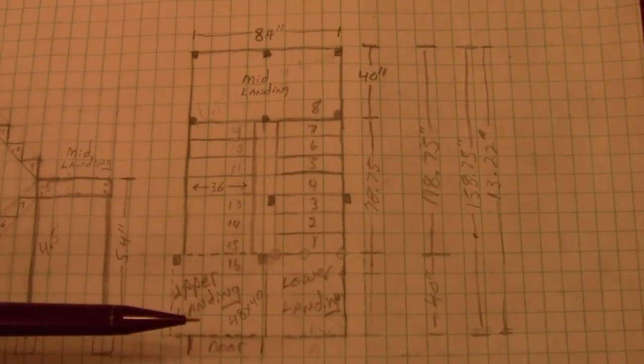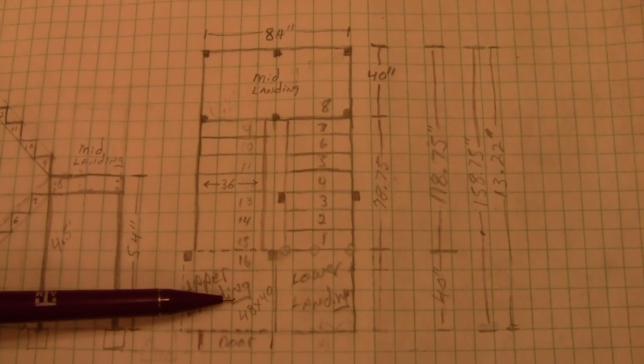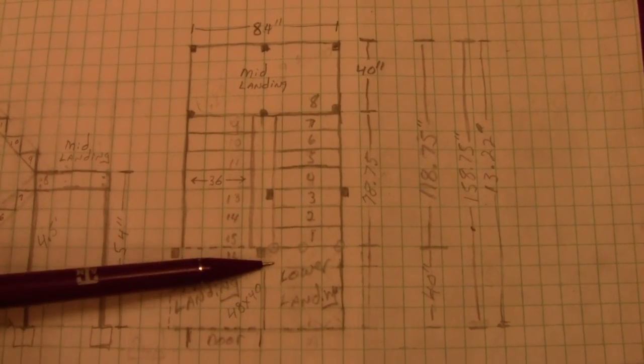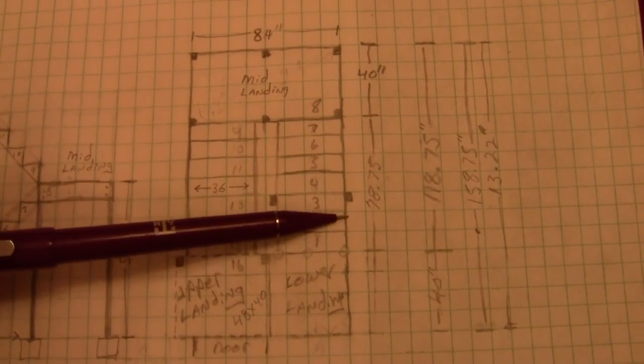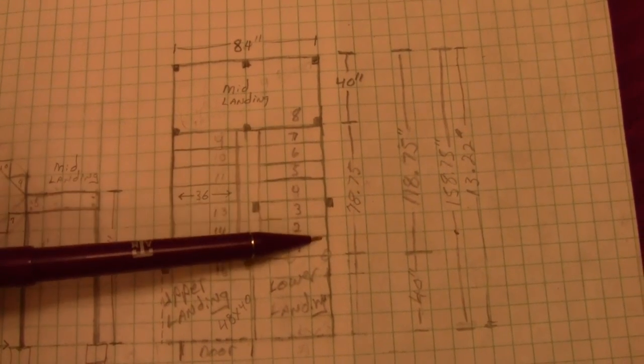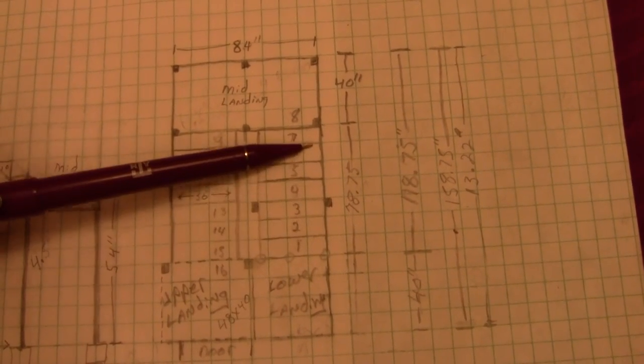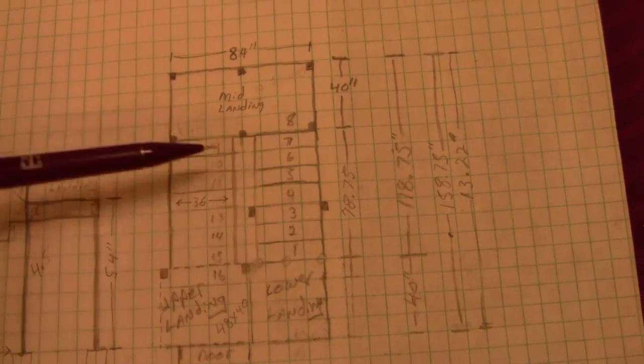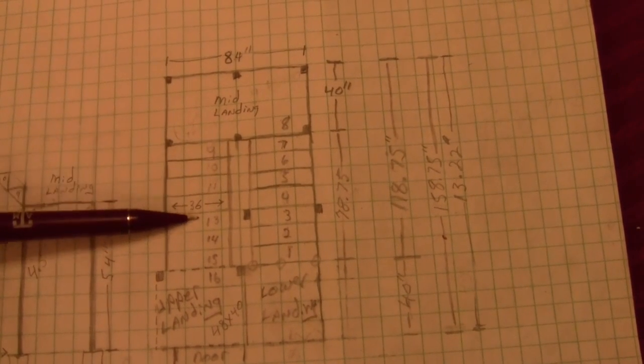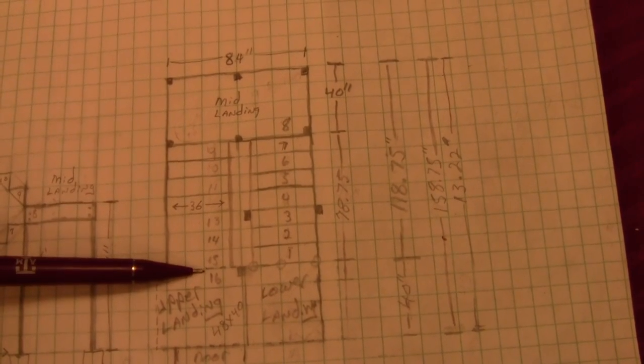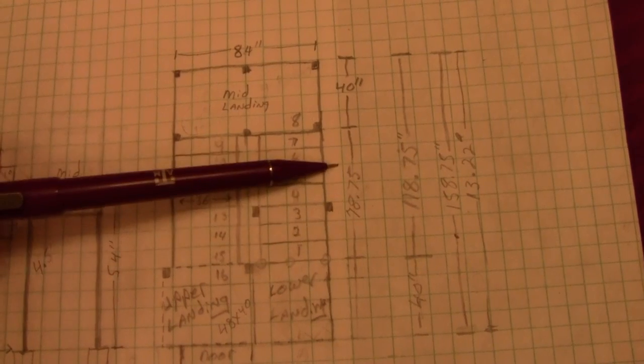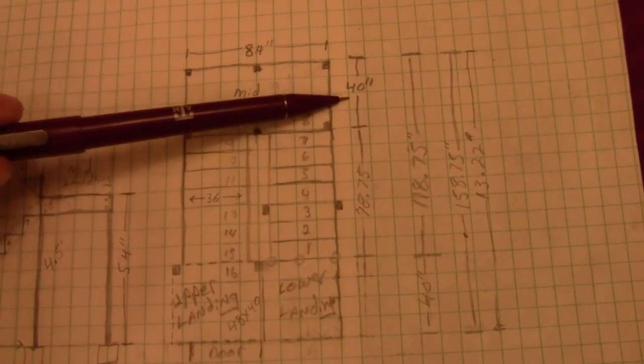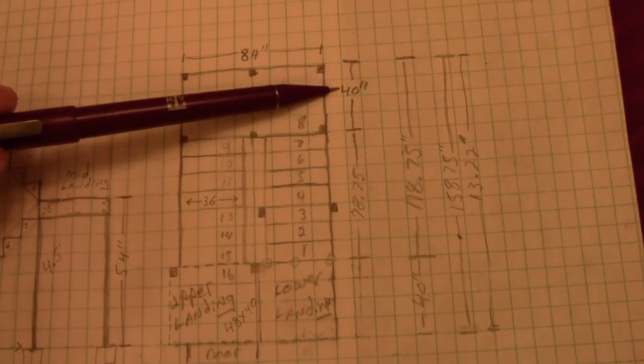Now, some general numbers that I've been able to derive from just having the rise and run measurement is the span of these steps that go up to the landing and that come from the landing up to the second floor. And, of course, I can add on to my mid-landing at 40 inches.